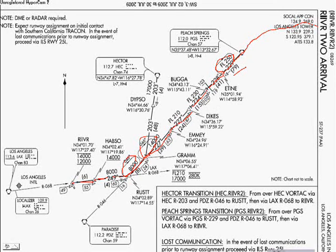Then you continue 8 miles at 8,000 feet. There's another holding pattern you could take — you don't have to take all of these. Then you continue heading 249 at 8,000 feet for 4 miles, then the same heading for 6 miles. Then you would get radar vectors in to Los Angeles.